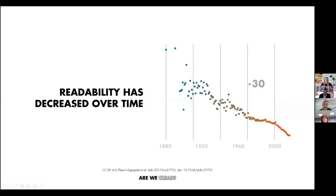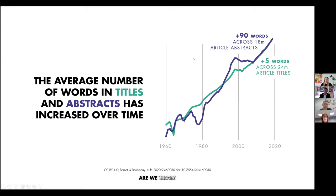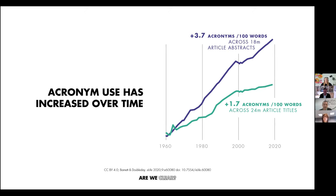This is a drastic reduction in readability over time — and it's stark. This is the Flesch Reading Ease score of more than 700,000 abstracts, showing a clear reduction of around 30 points over time. But it's not just readability — the average number of words in titles and abstracts is also increasing, and so is acronym use. We're putting acronyms into our abstract titles and abstracts, and it shows no sign of plateauing.